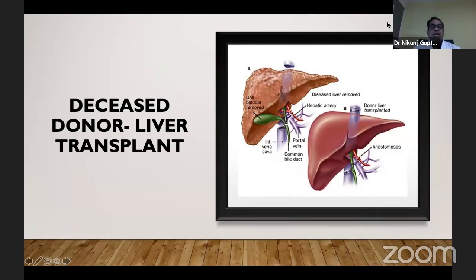In deceased donor liver transplantation, we remove the diseased liver and take out the entire liver from the deceased, and end-to-end anastomosis of the vena cava is done.